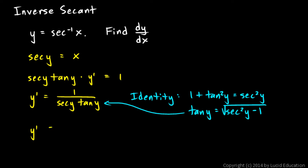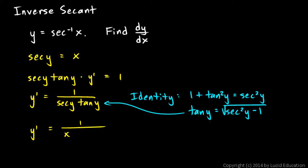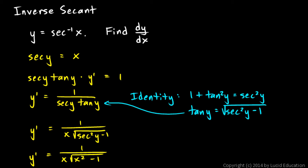So y-prime, the derivative we're looking for, becomes 1 over secant y. And secant y, remember, is just x. So let's write it as x times tangent y, which is the square root of secant squared y minus 1. And again, secant squared y — that's secant y squared, and secant y is just x. So y-prime is 1 over x times the square root of x squared minus 1.